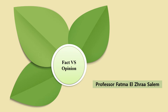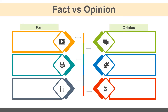As we know, critical thinking is the best possible way of determining which statements are fact and which statements are opinion. Fact is a true statement or a piece of information about something — a situation or problem — that can be tested. You can put it under experiment and prove it by clear evidence.